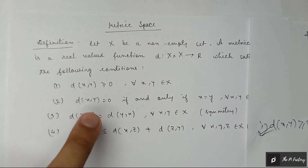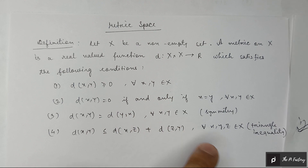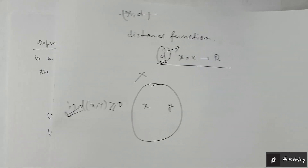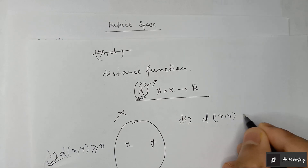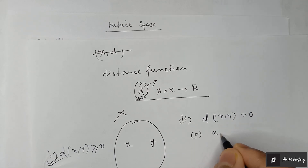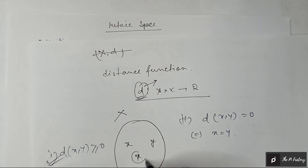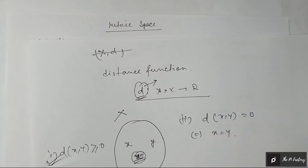The second condition is d(x, y) equals zero if and only if x equals y. This is also obvious: if x and y are at the same point, then the distance between them will be zero.